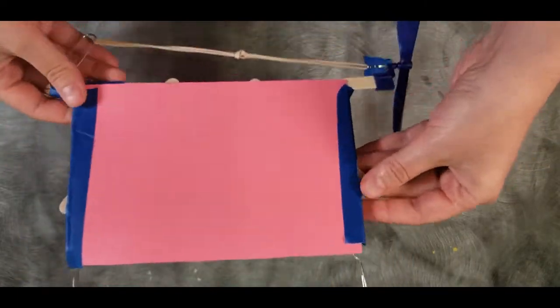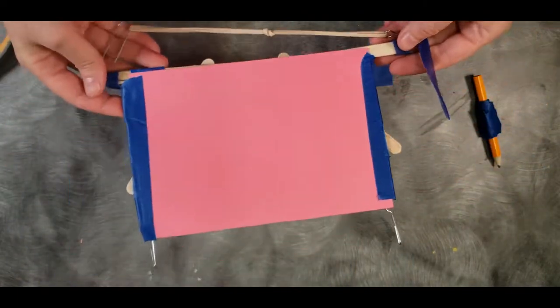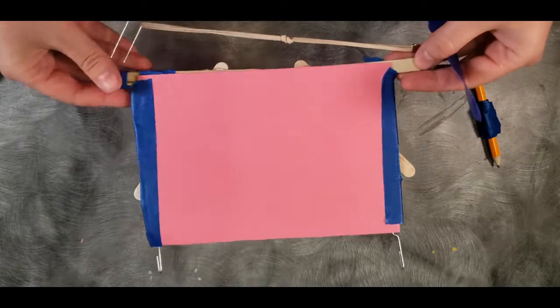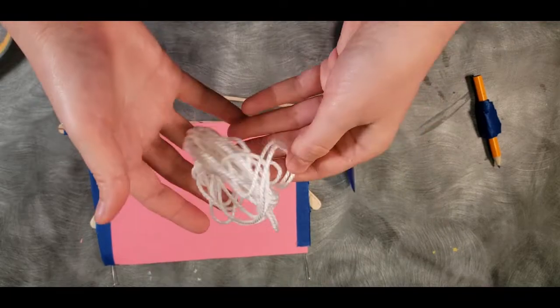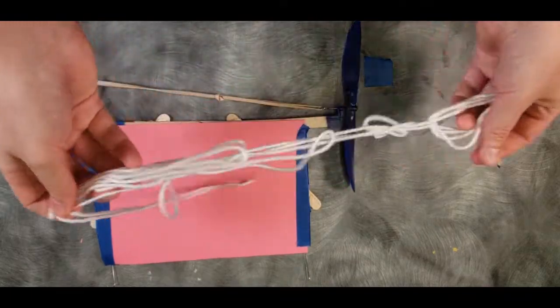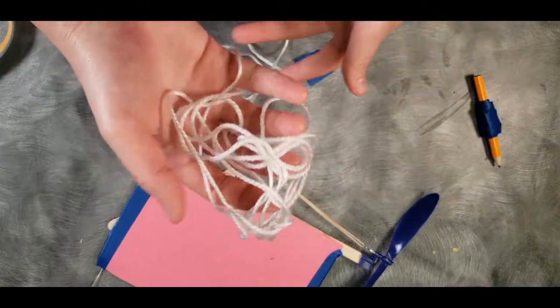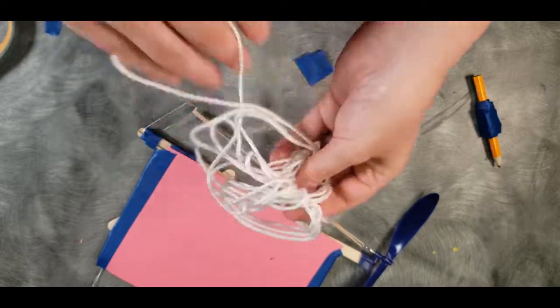All right, this is our finished zipline racer. Our next step is to string our zipline. You have a length of yarn. Anchor it to two things you have in the room. Here's my zipline.